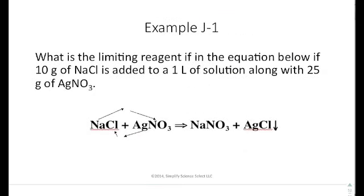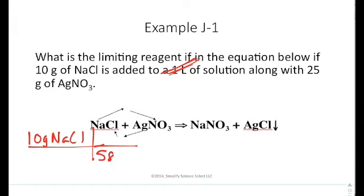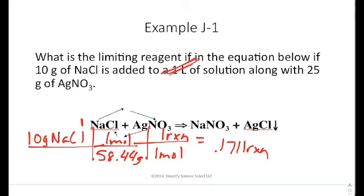So we see that in example J1, it says what is the limiting reagent if in the equation below 10 grams of NaCl is added to 1 liter of solution, along with 25 grams of silver nitrate. So if you look at this, this liter has nothing to do with it. That's just the water that you're adding it to, and that will give us concentration that we'll talk about later. But realistically, I have 10 grams of sodium chloride. So I have 10 grams of NaCl, and then I can look at the molar mass of NaCl, and I can figure out that it is 58.44 grams is 1 mole. Next, I can say that I need 1 mole for 1 reaction to occur, because this right here is 1. And then I can say that I can make 0.1711 reactions occur as a result of this.